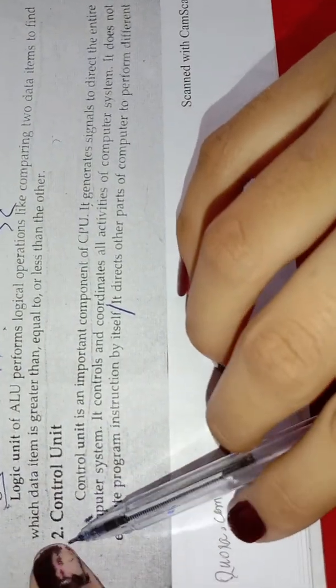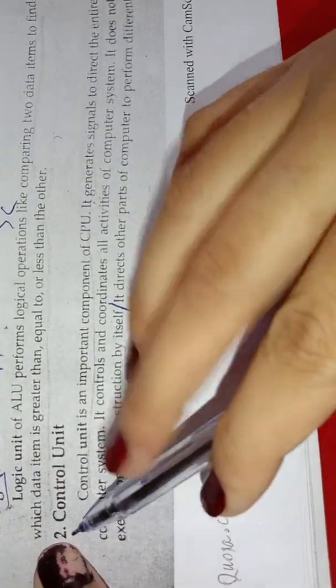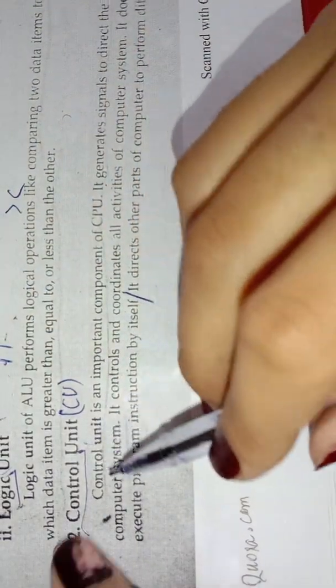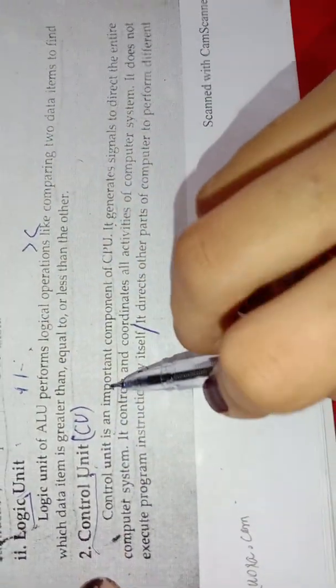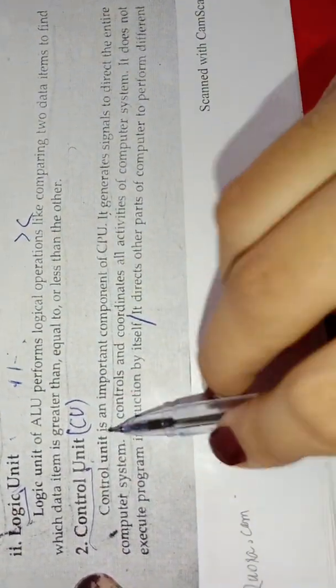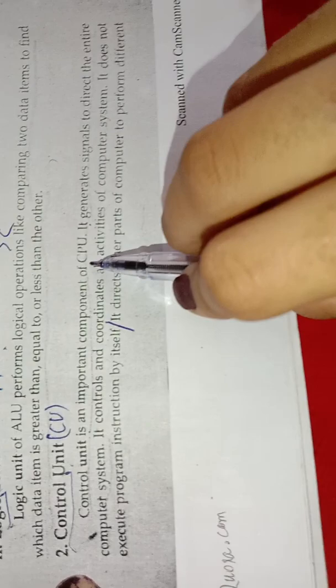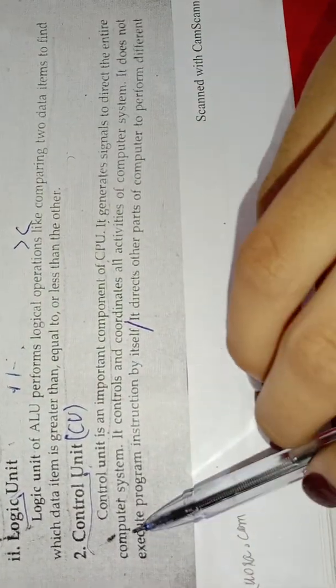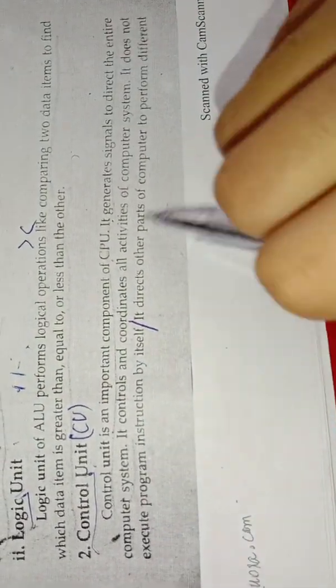The second part of the CPU is the Control Unit. What is the Control Unit? The Control Unit is an important component of the CPU. It generates signals to direct the entire computer system.